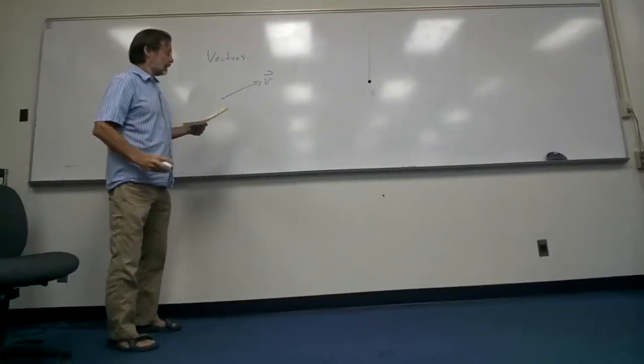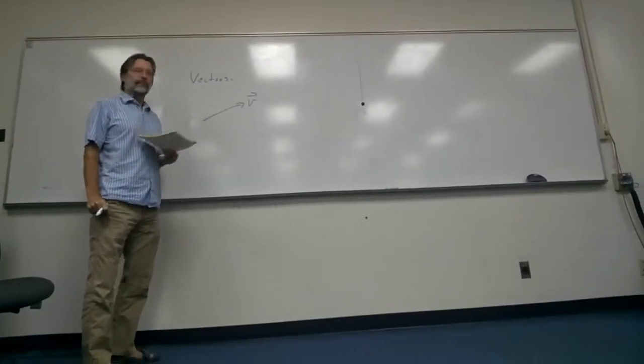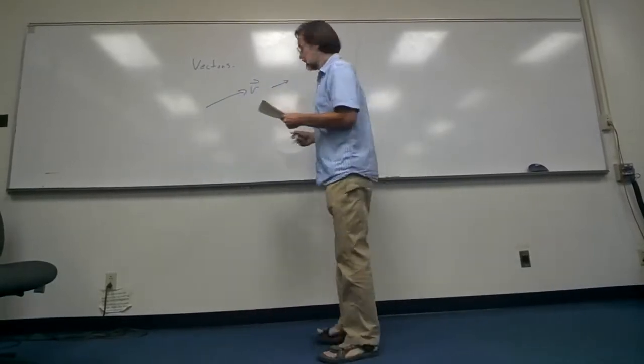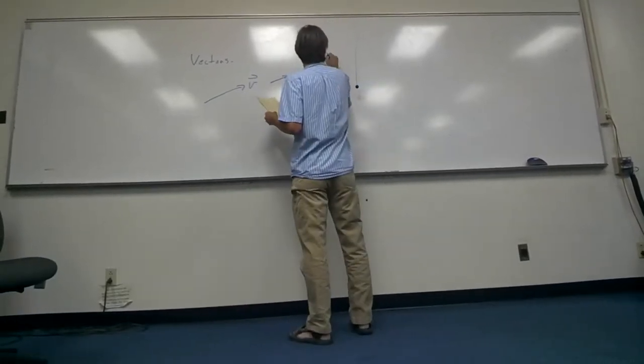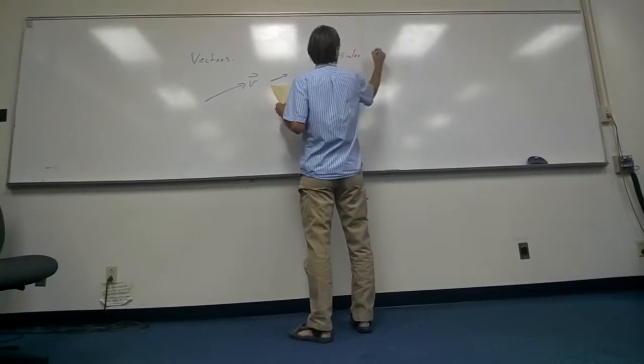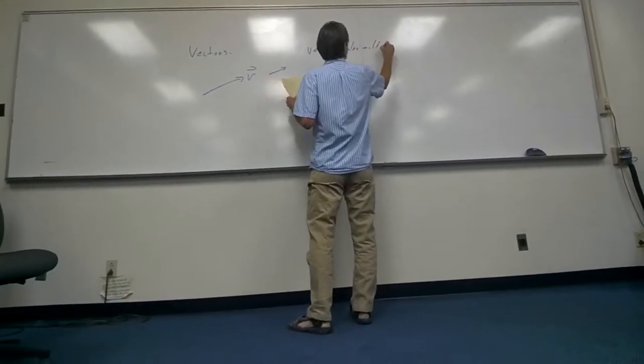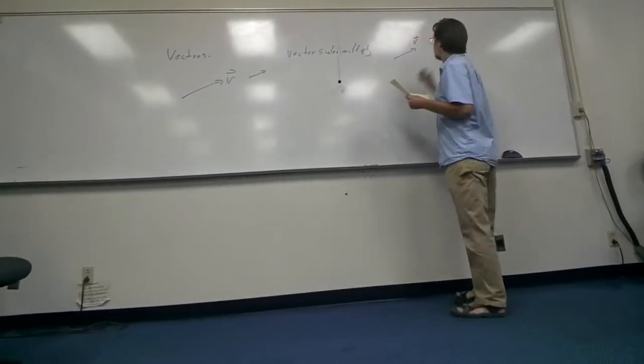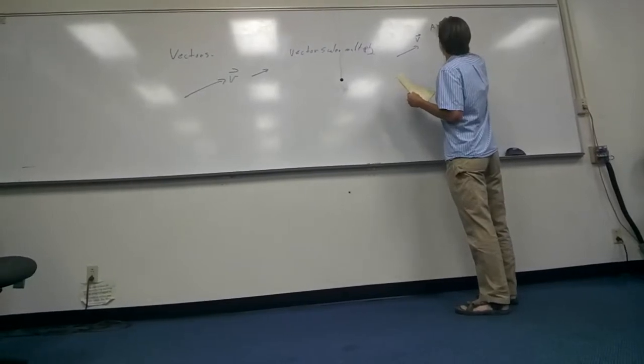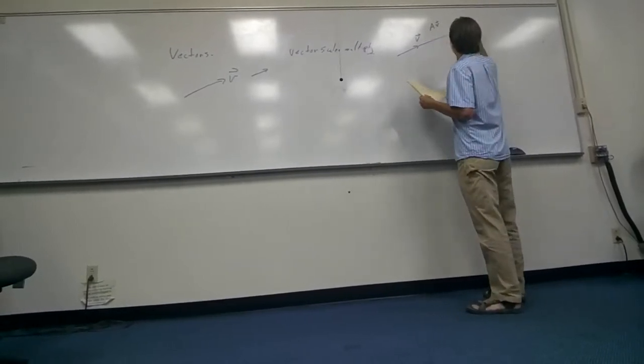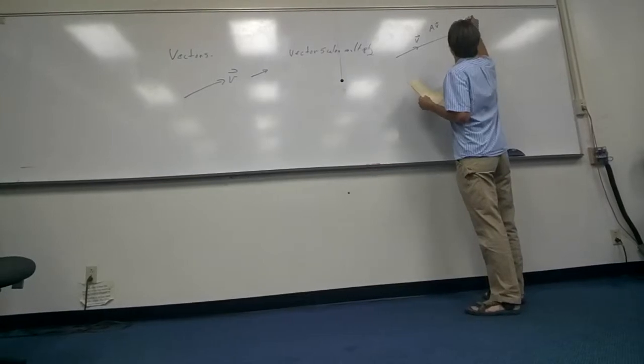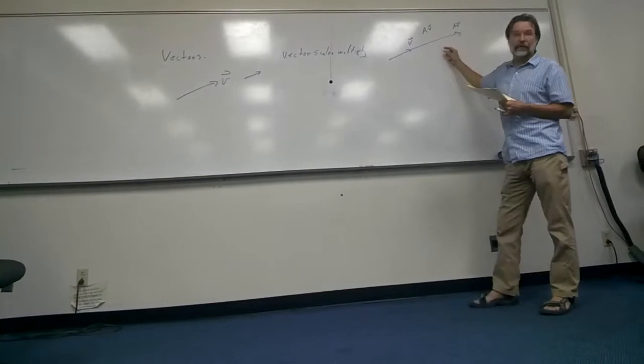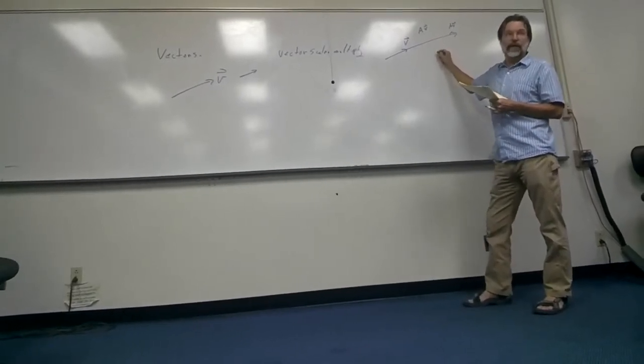Now, what are some vector operations? Well, some examples of vector operations is a vector scalar multiply. So if you have some vector v, and then a times v is just that vector, a times v. The scalar doesn't change the direction, but it does change the length or the magnitude.